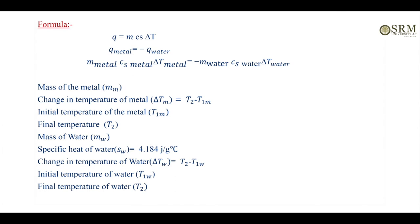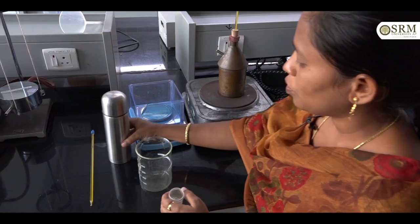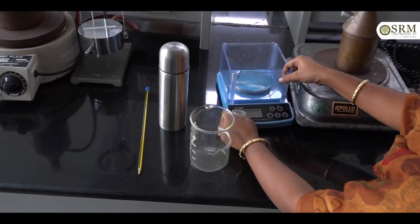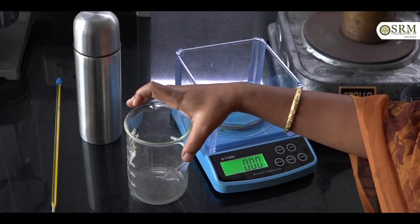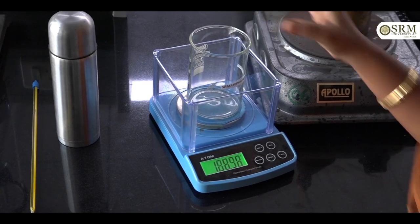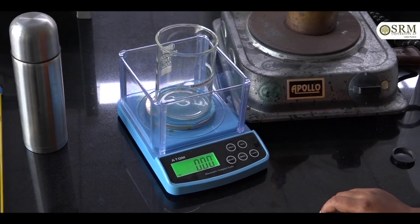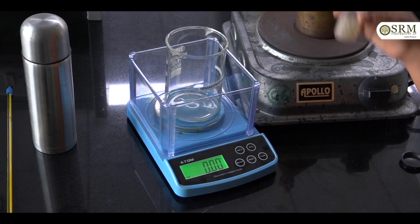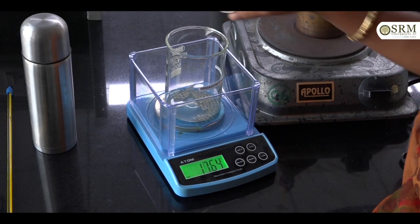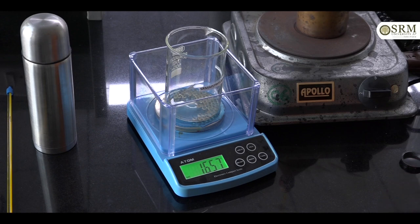Now we need to find the mass of the metal. We have the metal here. This is the weighing balance — switch on the weighing balance, then place the beaker on the balance. The beaker weight is 171. Tare the balance so the beaker reads 0, then keep the metal into the beaker. The mass of the metal is 16.58 grams. Write down the mass of the metal: 16.58 grams.